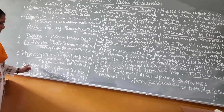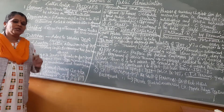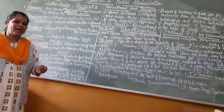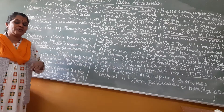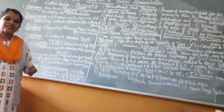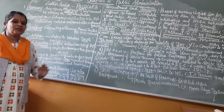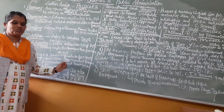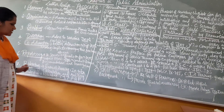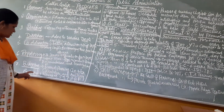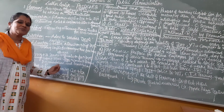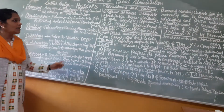The last concept in POSDCORB is budgeting. Just as in a household where all earning members sit together to plan income and expenditure, the government also does budgeting. It is one of the most important aspects of financial planning for the government, and it includes income, expenditure, calculation, and auditing of financial matters.